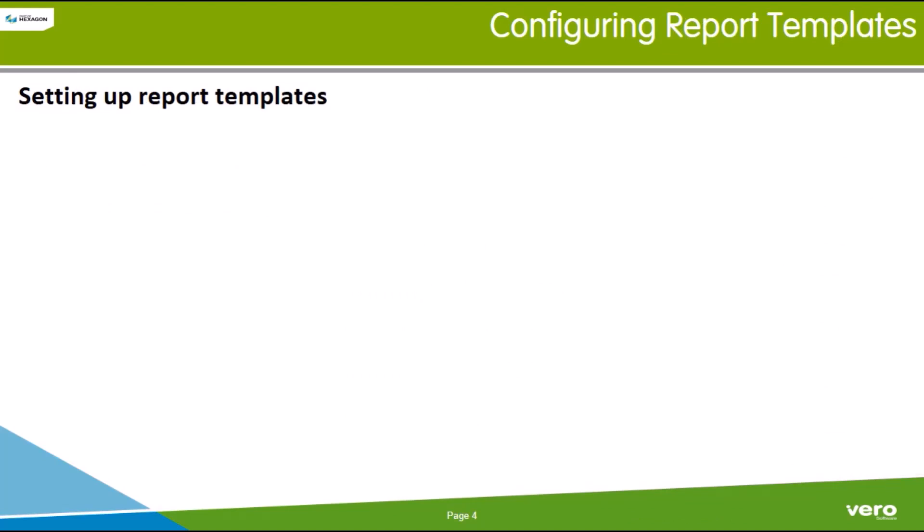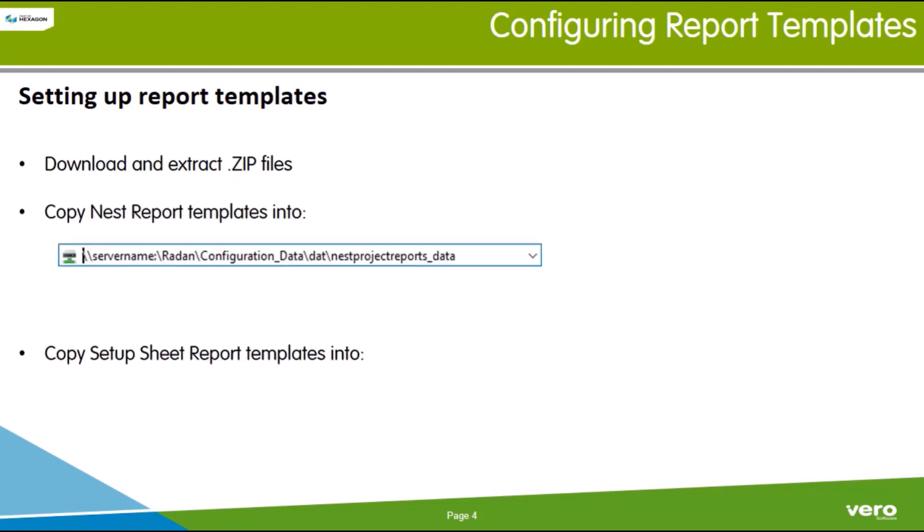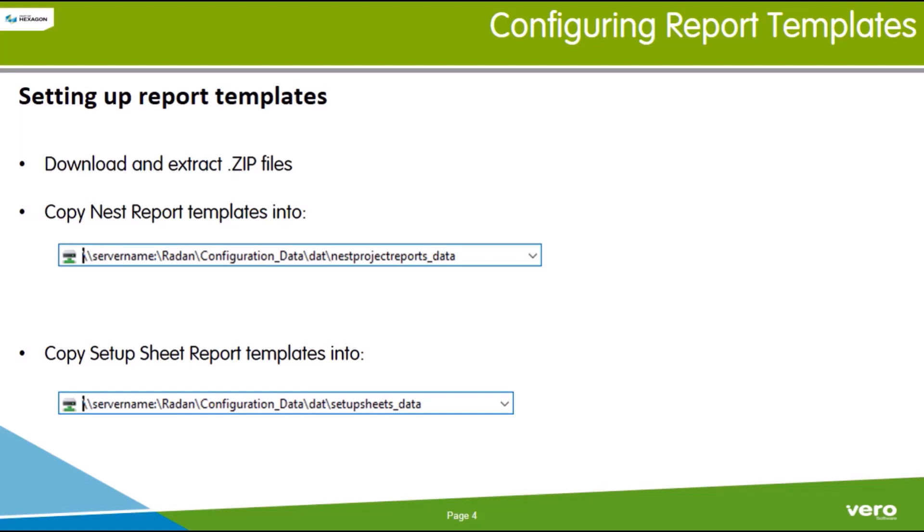To set up these report templates, just extract the downloaded zip files and then copy the file contents into the appropriate template storage locations within the RADAN centralized configuration folder. For NEST report templates, the folder name is NEST_project_reports_data. For setup sheet reports, the main folder is setup_sheets_data.